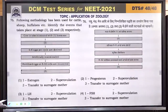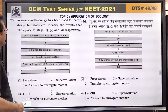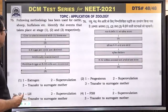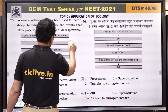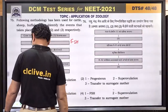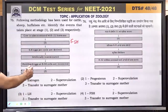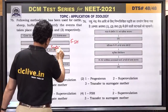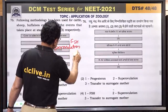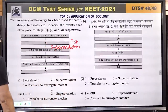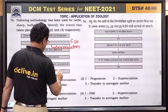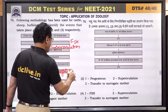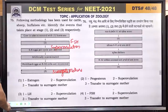Question number 76: the following methodology has been used for cattle, sheep, buffaloes — identify the events in stages 1, 2, and 3. Stage 1: FSH analog hormone is given. Stage 2: super ovulation occurs — many eggs released at once. Stage 3: at 8 to 32 cell stage, embryo is transferred to surrogate mother. Answer is 4.